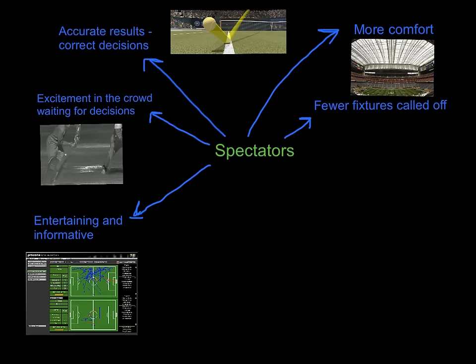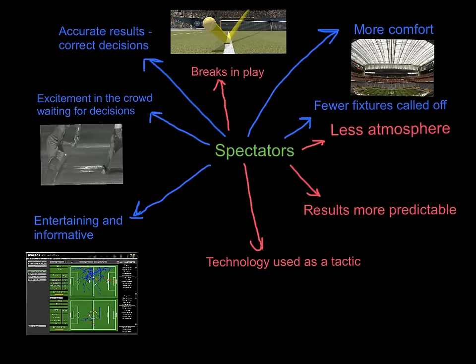Those are some key advantages of technology for the spectator. Now for the disadvantages: we are guaranteed more breaks in play to allow for fair decisions, but not a lot of people like that — we want sport to flow, so there's an issue there. Also with modern stadia, we can have less atmosphere — it's not the same as what we're used to, and that can be a disadvantage to spectators. Technology can also be used as a tactic deliberately to throw players off their rhythm and do a bit of time wasting, which is not a good thing.